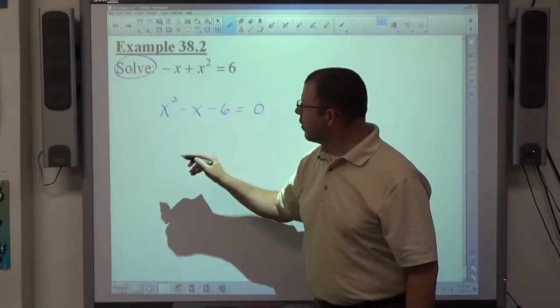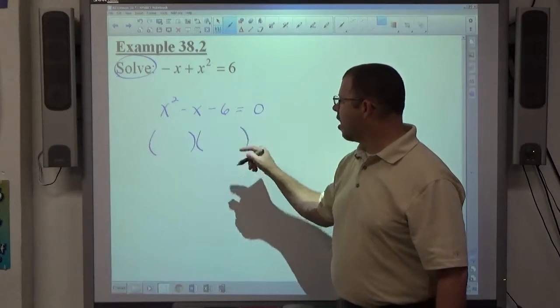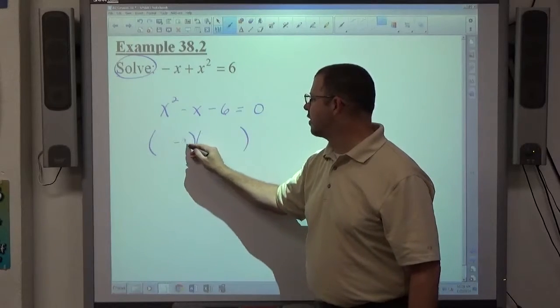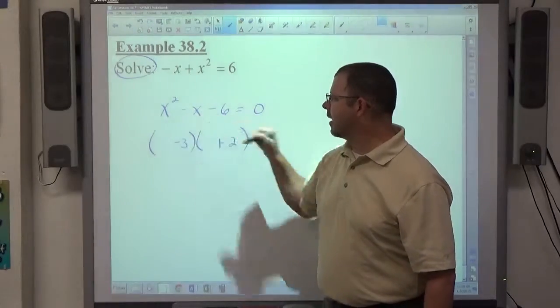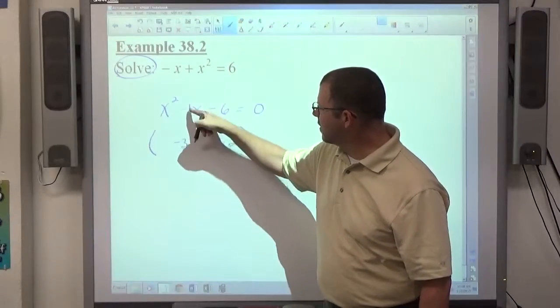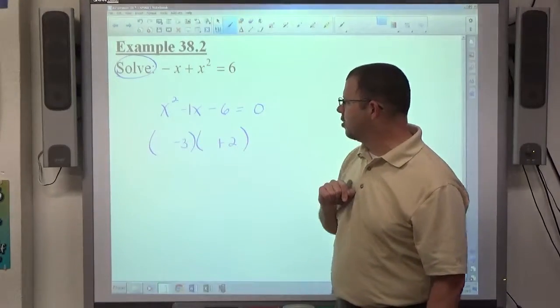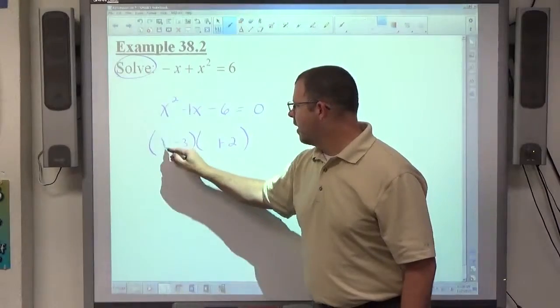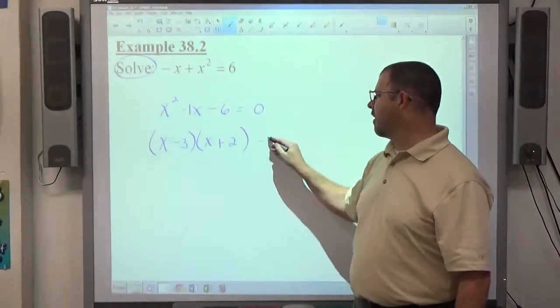If you have positive 1x squared, that's your best friend because it factors easily. All you need is two numbers to multiply to make negative 6, but also add to make negative 1. Negative 3 and positive 2 make negative 6 when I multiply. This negative 1 in front of x, negative 3 plus 2 makes negative 1. x goes with both of those, so there's my factored form.